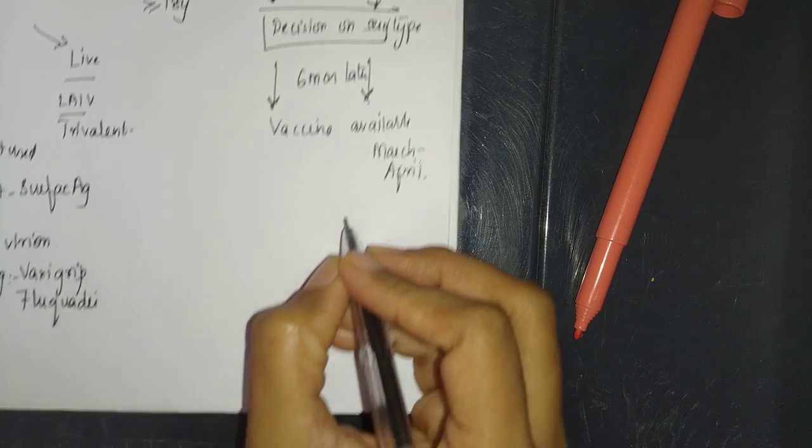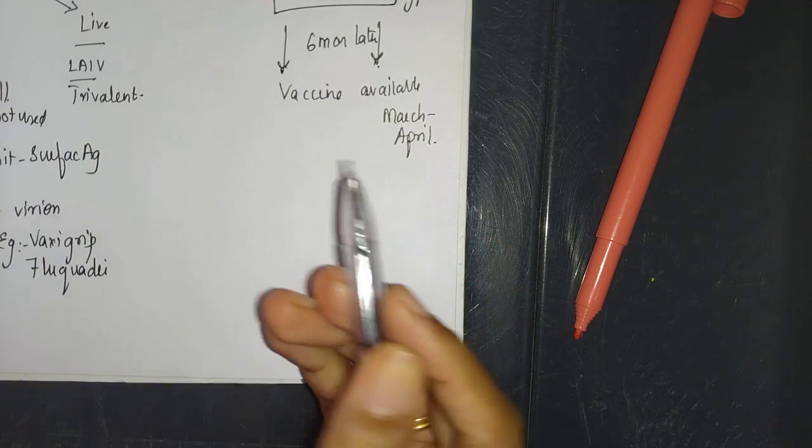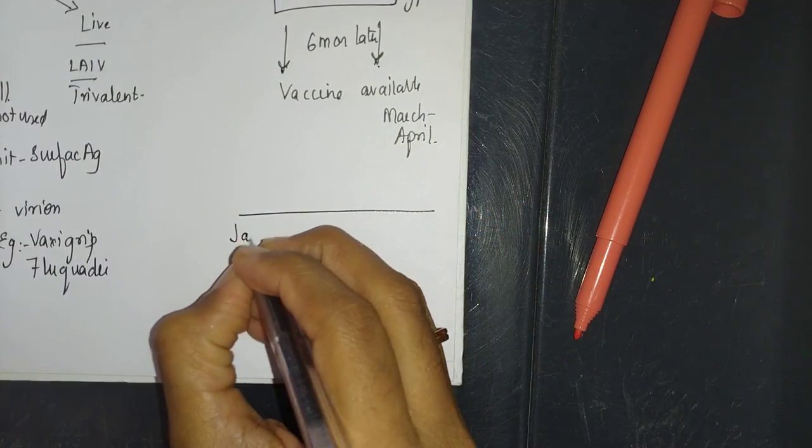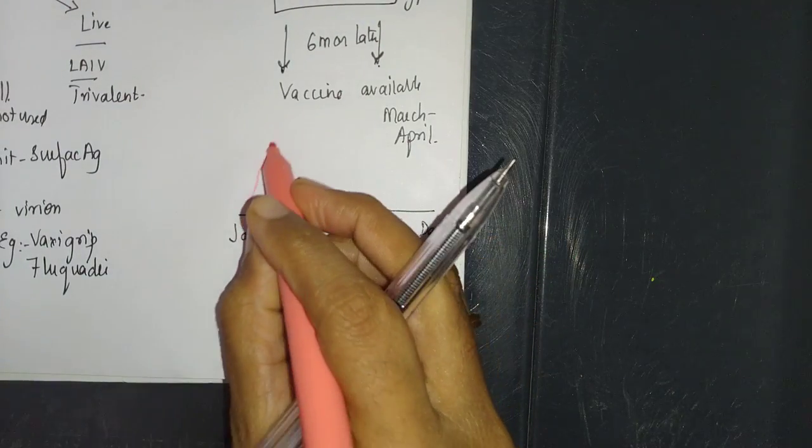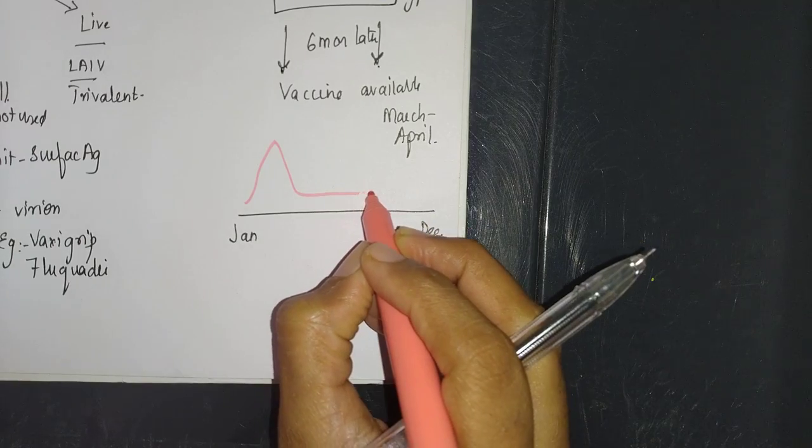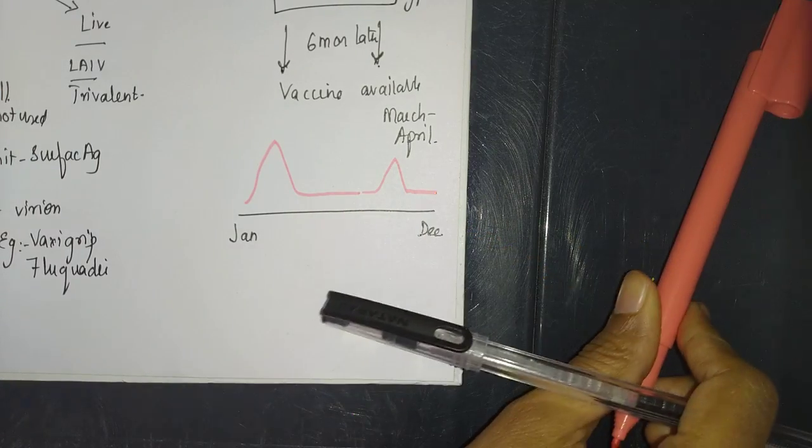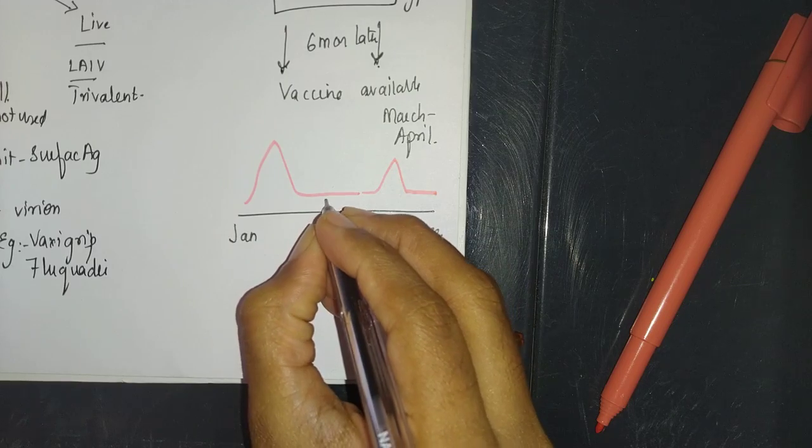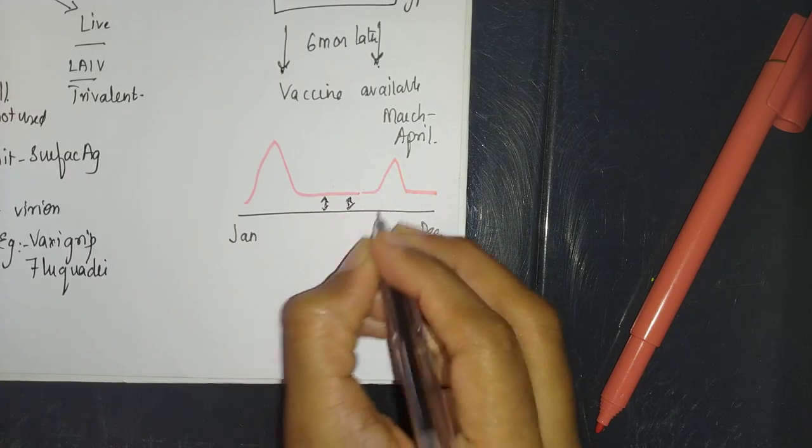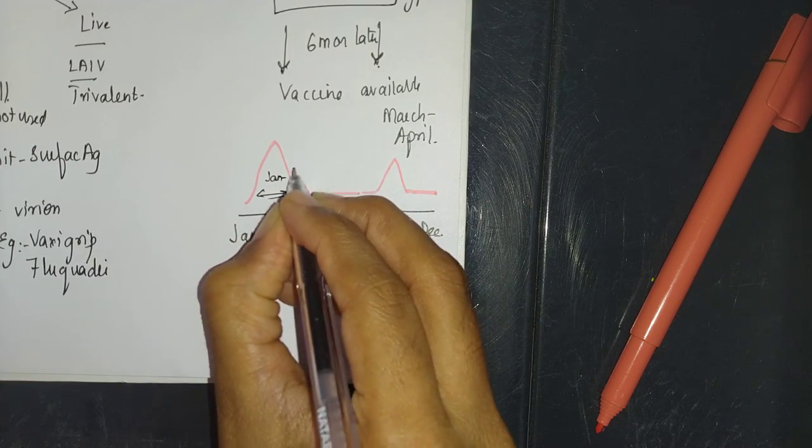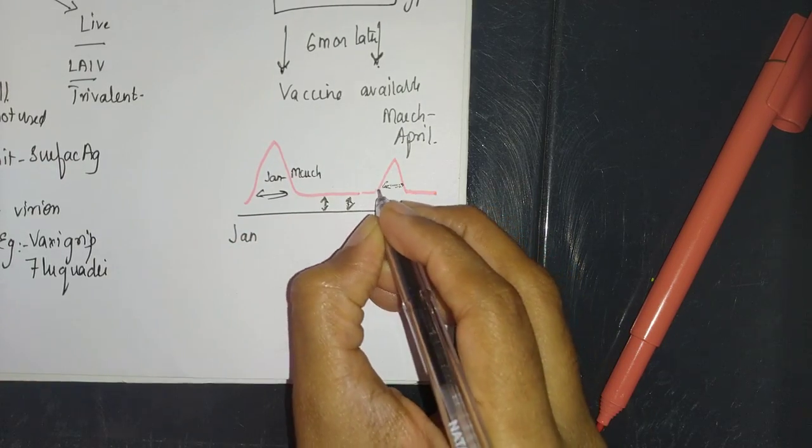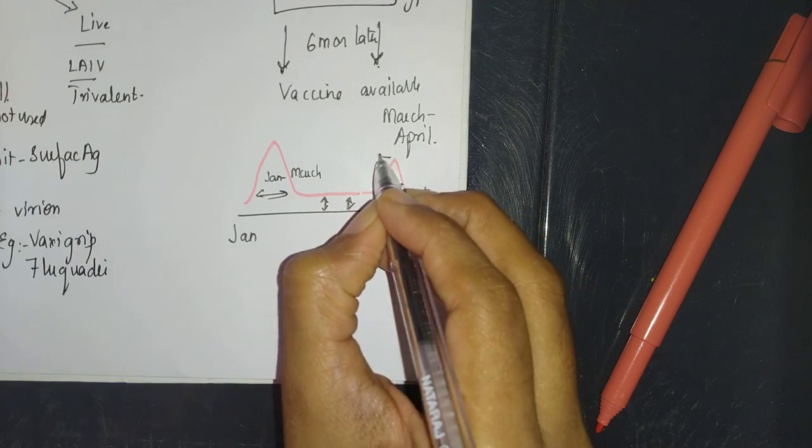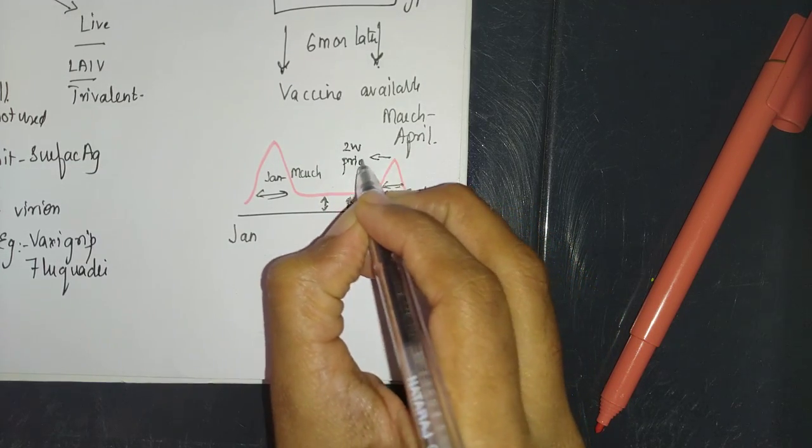Why is this important? Because there is seasonality of the virus. As far as India is concerned, you have two peaks: one in January-March and the other in August-September-October-November, based on whether it is northern, mid, or southern India. But it is not touching baseline, so there is year-round circulation with two peaks. The vaccine has to be given at least two weeks prior to onset of the peak season.